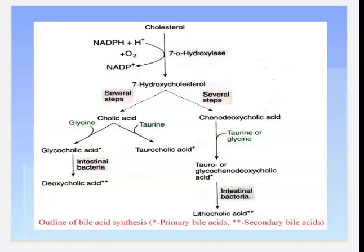This is the diagrammatic representation of cholesterol metabolism. Cholesterol is converted into 7-hydroxycholesterol with the help of the enzyme 7-alpha hydroxylase, where NADPH is reduced to NADP+. After that, 7-hydroxycholesterol is converted into cholic acid as well as chenodeoxycholic acid through several reaction steps.